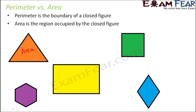Everything inside the triangle is the area, while the perimeter is just the length of the sides — the total length of the boundary lines. Similarly, the yellow region is the area of the rectangle, the green region for the square, the blue region for the kite, and the purple region for the hexagon. So area is the entire space enclosed by the polygon or any geometrical shape, whereas perimeter is the total length of the boundary — this is the clear difference between perimeter and area.